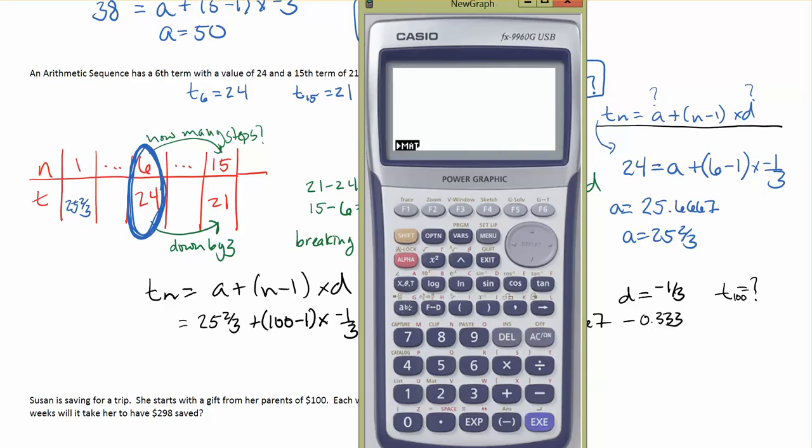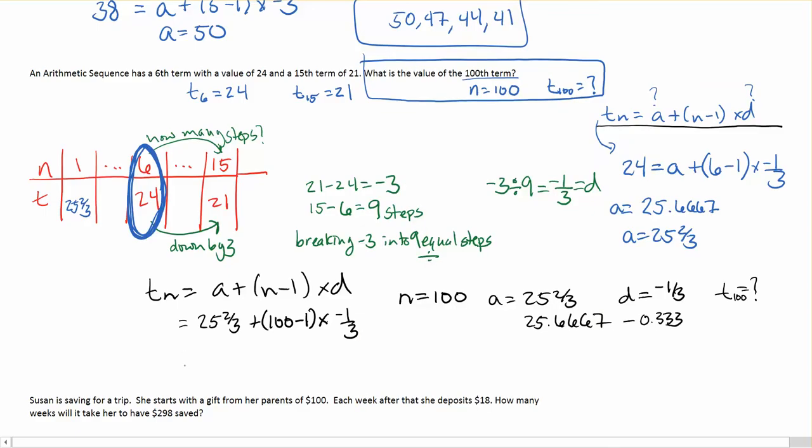And, my calculator, going back to my main menu here. 25 and 2 thirds, if you're going to write it out, you could just go times 2 divided by 3. We can use our fraction button. My fraction button is not working. So, we'll go 25.6667 plus 100 minus 1, which is just going to be 99 times negative 1 divided by 3. And, here we get negative 7.33.